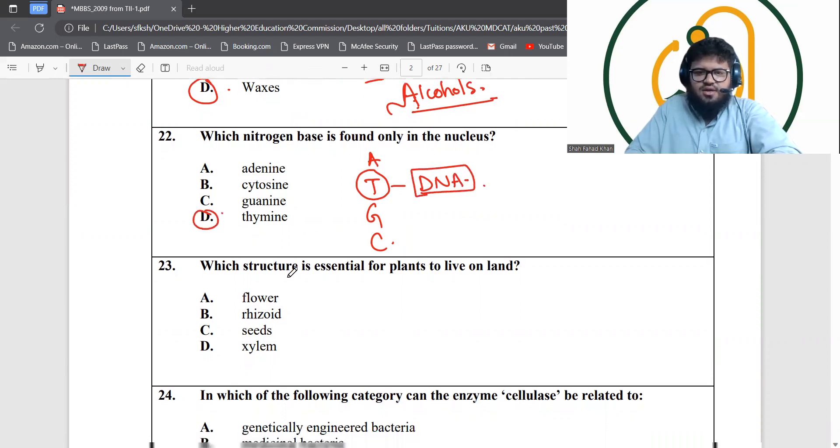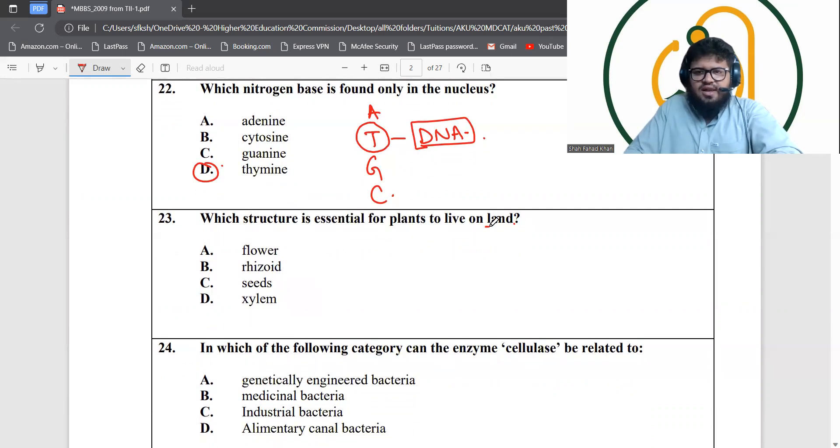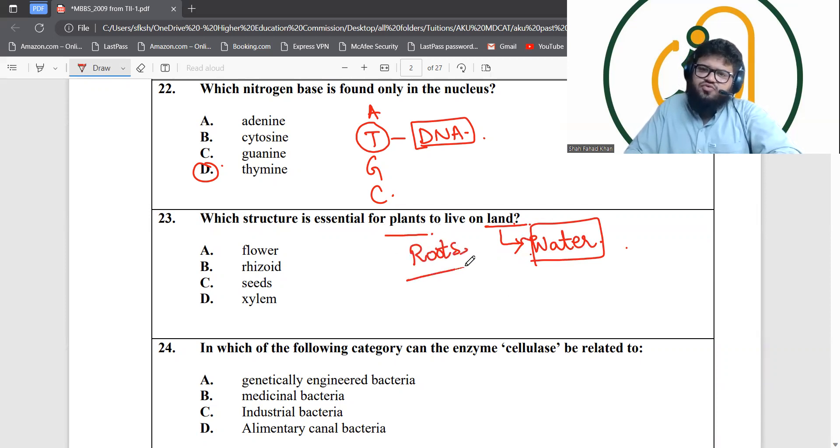Which structure is essential for plants to live on land? Land is a very harsh environmental condition with a lot of stresses. The biggest stress that organisms face is water. If you don't have water, you cannot survive on land. For plants to absorb water from the land, they have to have roots. The structure closely related to roots is the rhizoid structure. Rhizoid is the root type or analogous to roots, so therefore rhizoid is your best answer.